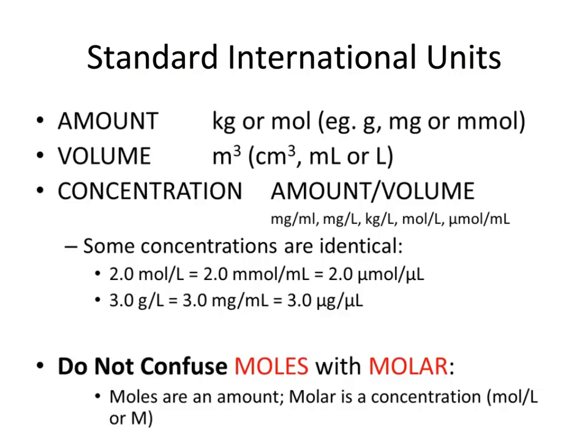Concentration is an amount per volume. So it can either be milligrams per mil, milligrams per litre, kilograms per litre, or moles per litre. And if it's really small, it could be micromoles per mil. Some concentrations using this method are identical, such that two moles per litre is equivalent to two millimoles per millilitre, or two micromoles per microlitre.